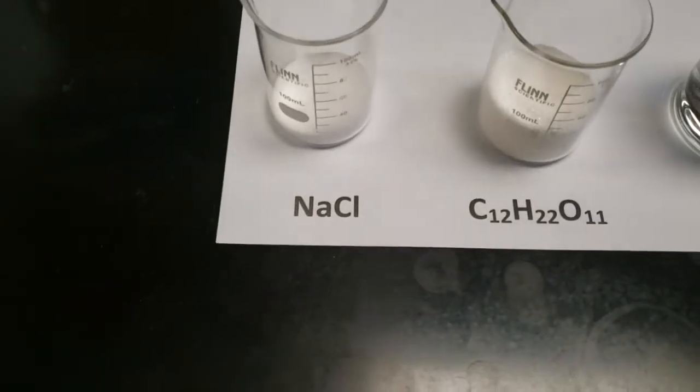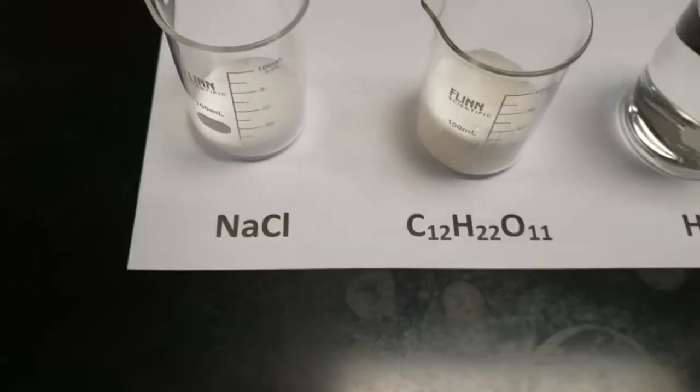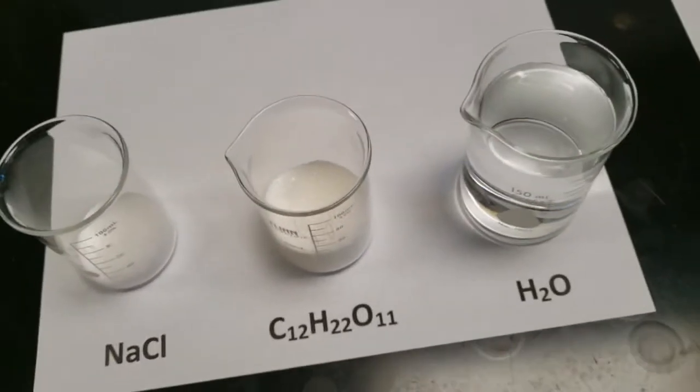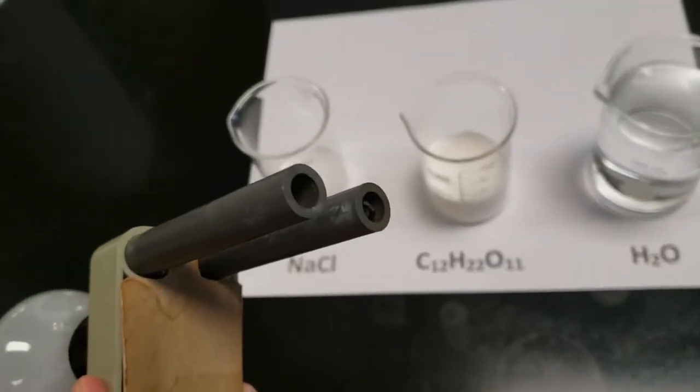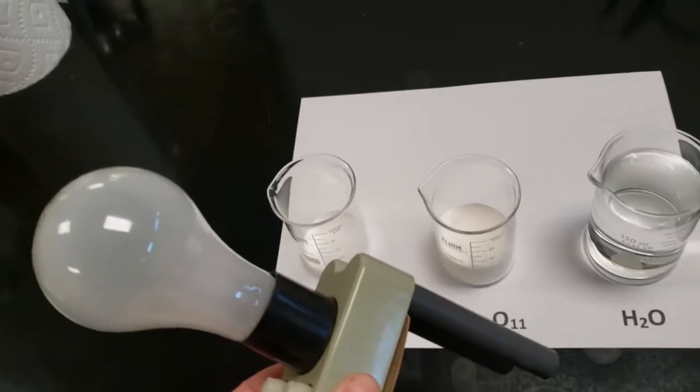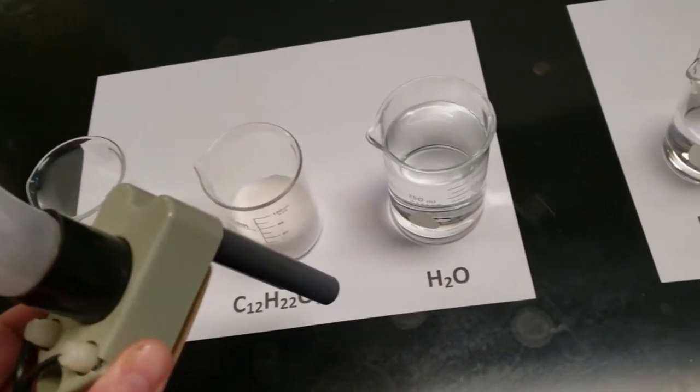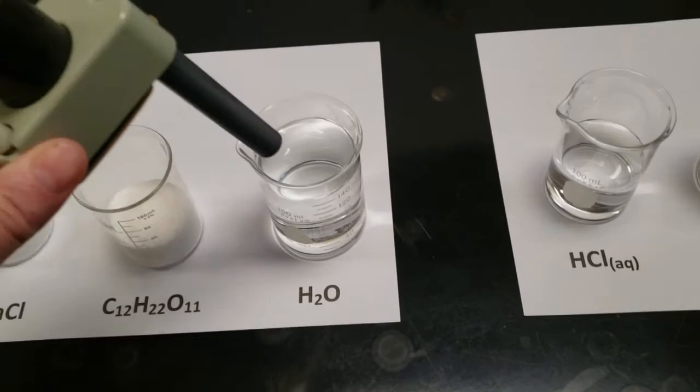We have sodium chloride. It's an ionic compound. We have table sugar, C12H22O11. That's a disaccharide. It is two sugars stuck together, but it's a molecule. And water, which everybody says water conducts a current. So let's find out.